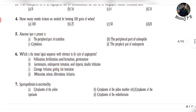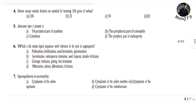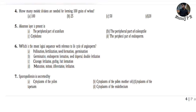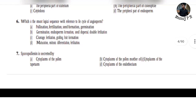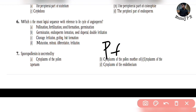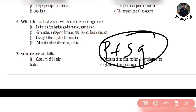Question 5: The aleurone layer is present in the seed — it is the peripheral part of the endosperm, so the answer is option D. Question 6: What is the most logical sequence with reference to the life cycle? Use the simple mnemonic PFSG — P stands for pollination, F stands for fertilization, S stands for seed formation, G stands for germination.